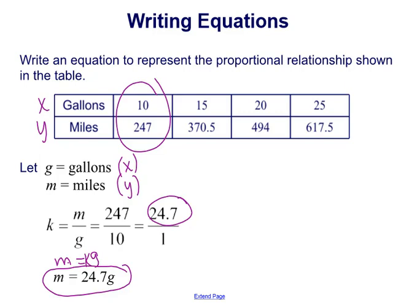So when writing equations, finding that constant of proportionality by finding the unit rate is always the first step, and then using that y equals kx format with whatever variables you have and putting it in that format is the second step.